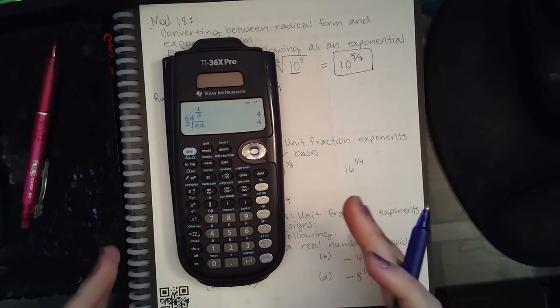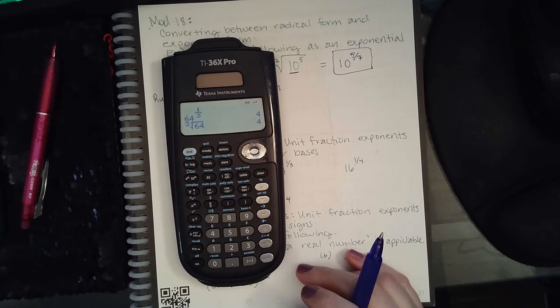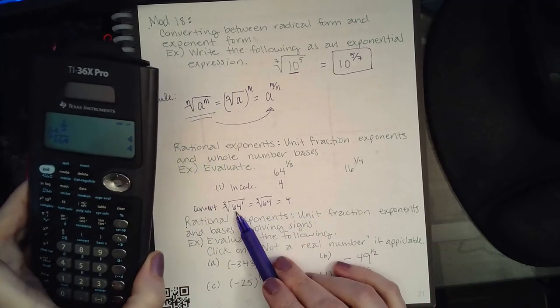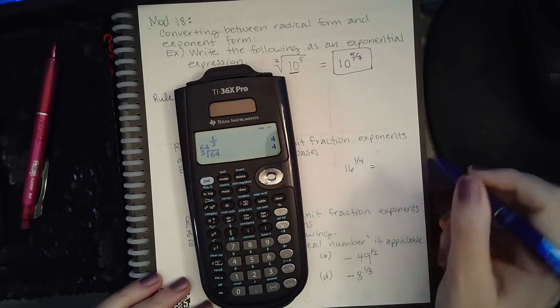Whichever method you prefer—honestly, just typing them in the calculator is probably fastest. But when you have variables as your bases, you cannot type x to the 1/3 in your calculator; you'd have to do that on your own. So it's helpful to know how to convert to a radical and simplify.